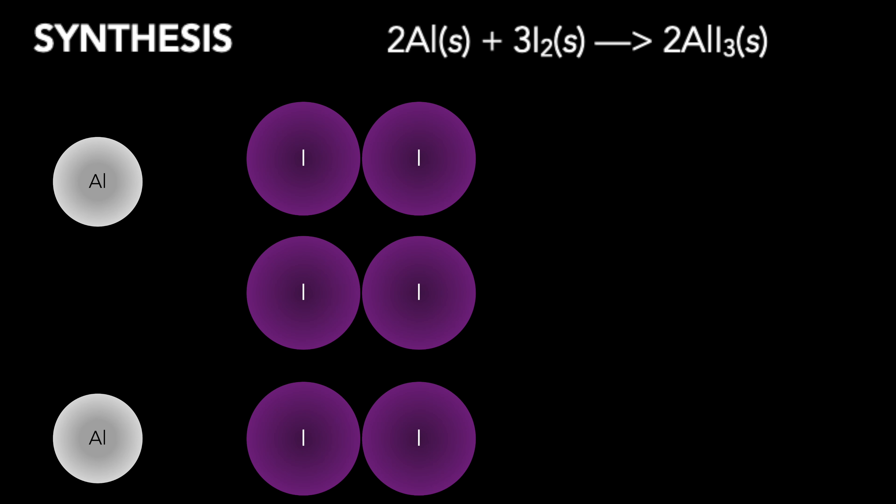Our two substances here are elemental aluminum and diatomic elemental iodine. In our balanced reaction, we have more than one of each substance, however. So it can seem a little more confusing when looking at the particle diagram.